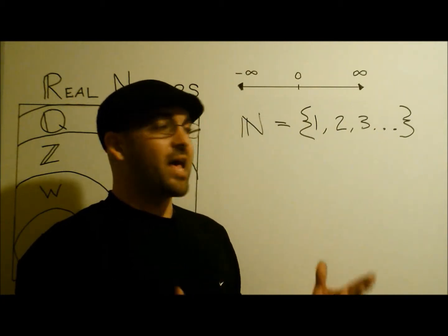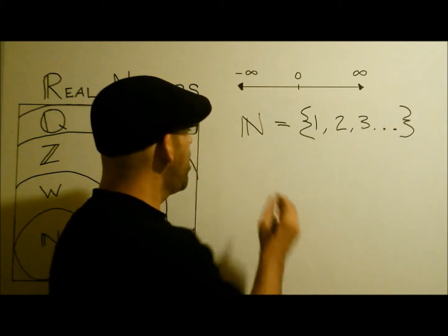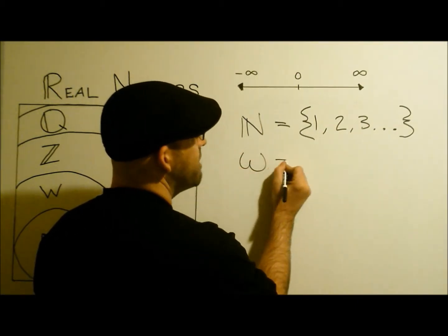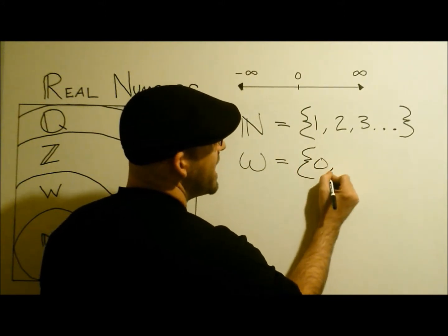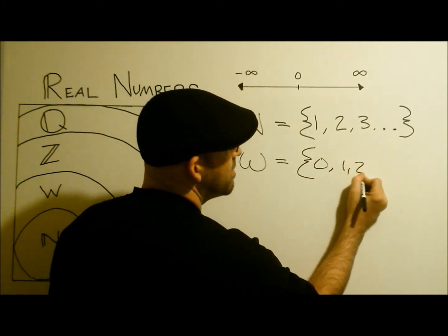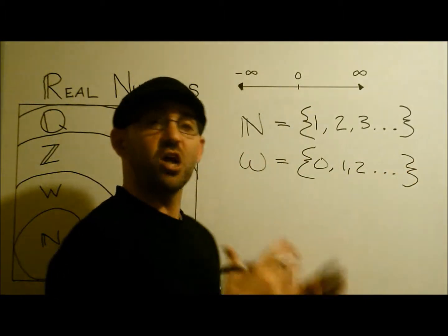What about other numbers, like zero? Well, this is where the whole numbers come into play. Whole numbers, we'll signify by a large W, is zero plus all the natural numbers. This is all the whole numbers.